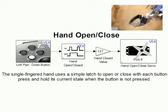The simplest section of Reaper's programming uses a latch to open and close the hand's single gripping finger, allowing objects to be easily picked up and held by the robot.